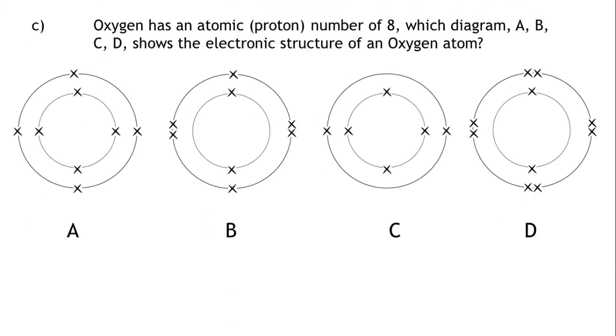Part C: Oxygen has an atomic number or proton number of eight. Which diagram, A, B, C, or D, shows the electronic structure of an oxygen atom?